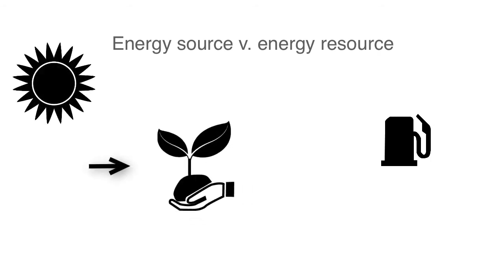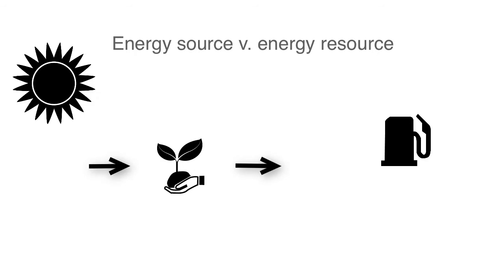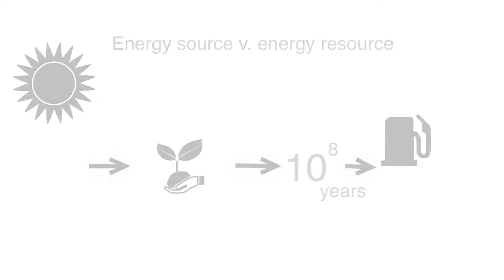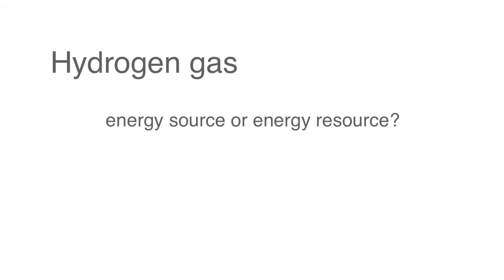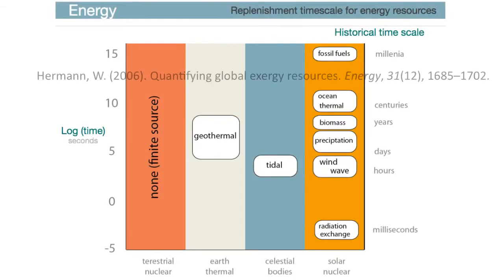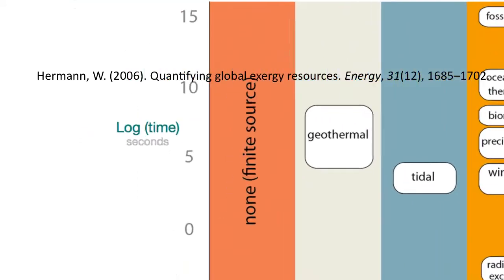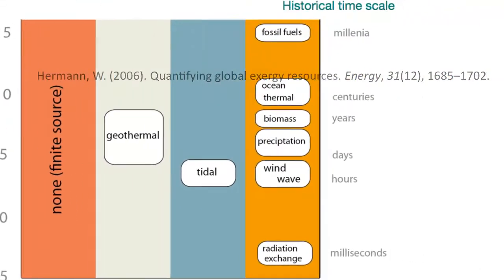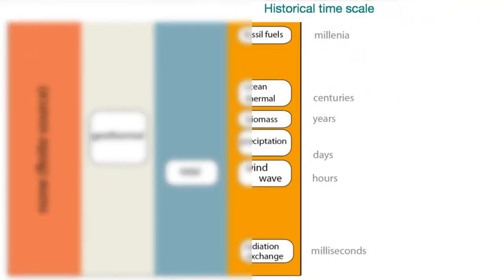This may be more clear if one thinks about hydrogen gas. Is it an energy source or is it an energy resource? This graphic depicts the four known stable energy reservoirs or resources on Earth and their replenishment timescales. As you can see, there's a log scale on the left with seconds, and on the right is a scale that refers more to a historical timescale.